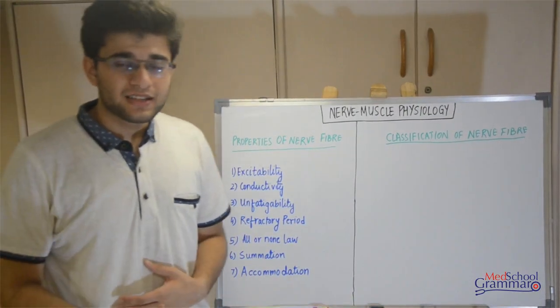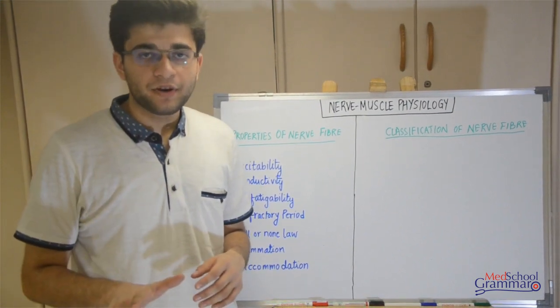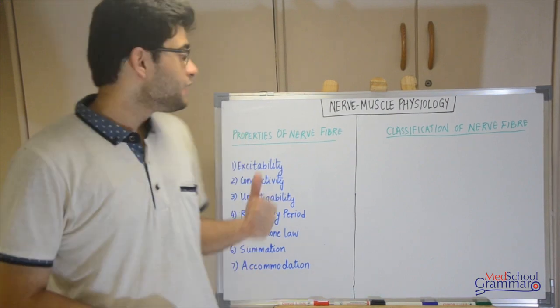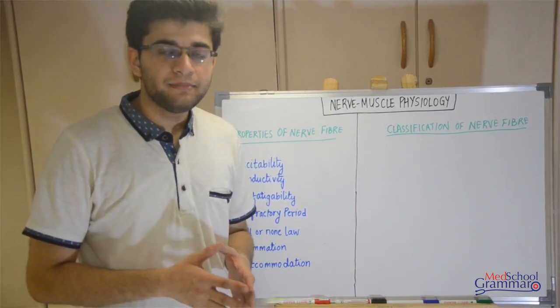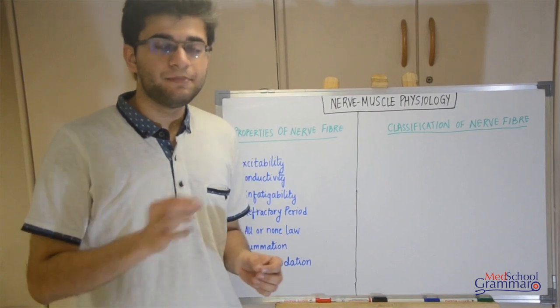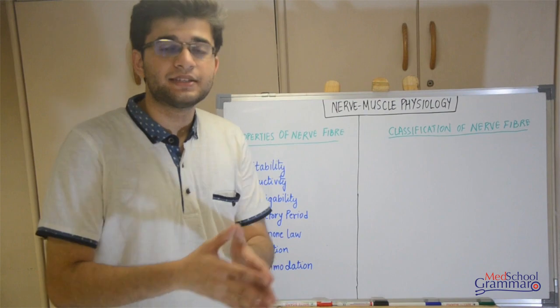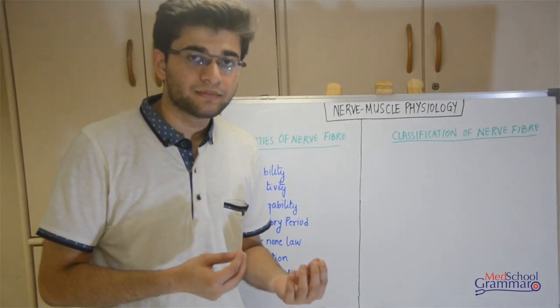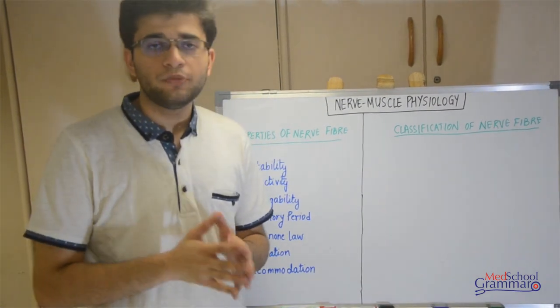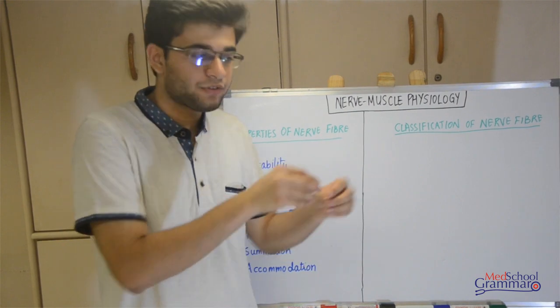Now we discuss the properties of nerve fiber. There are seven basic properties. The first is excitability — when a nerve fiber is stimulated, it is excited and transmits an impulse. The second is conductivity — the transmission of a nerve impulse from one point to another.